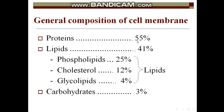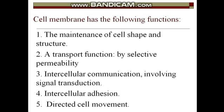Regarding composition, proteins make up 55 percent, lipids 41 percent — of which 25 percent are phospholipids, cholesterol 12 percent, and glycolipids 4 percent. Carbohydrates compose 3 percent, found on the outer surface of the cell. Moving on to cell membrane functions.